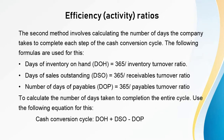The second method involves calculating the number of days the company takes to complete each step of the cash conversion cycle. Days of inventory on hand (DOH) = 365 / inventory turnover ratio. Days of sales outstanding (DSO) = 365 / receivables turnover ratio. Number of days of payables (DOP) = 365 / payables turnover ratio. To calculate the entire cycle, the cash conversion cycle = DOH + DSO − DOP.